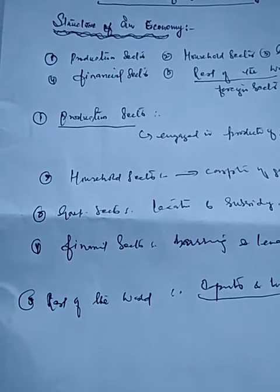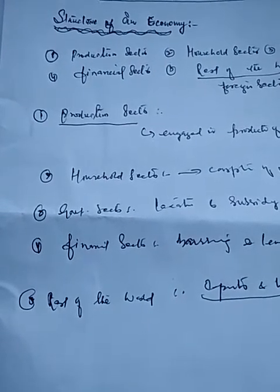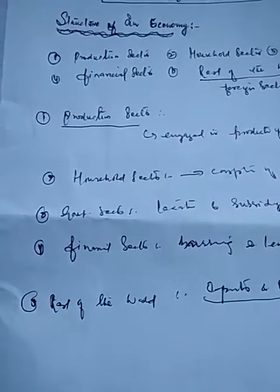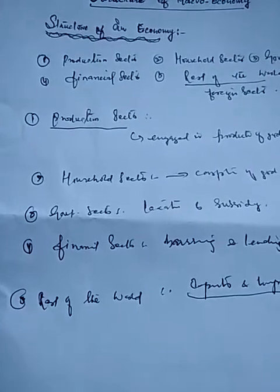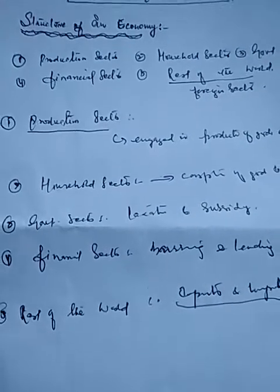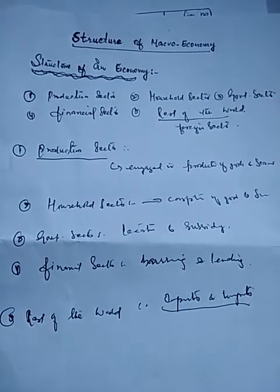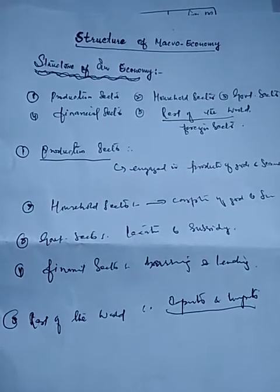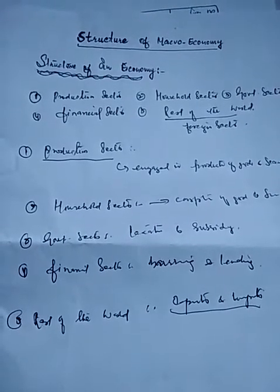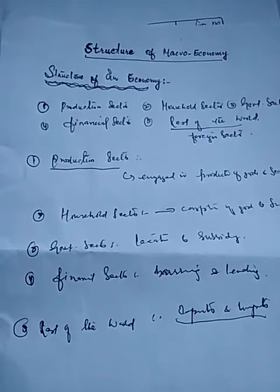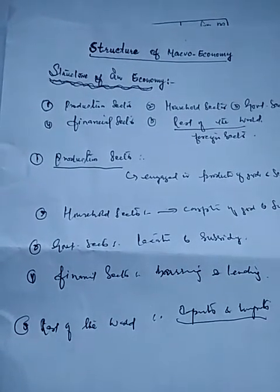So we have five sectors at work in the circular flow of income. These sectors work together, and there are certain injections and leakages into these sectors. It is through these injections and leakages that national income is generated. In the next lecture, we have to discuss the circular flow of income and the circular flow of goods and services across these five sectors. In the coming days, we will also discuss national income — how it is generated and various concepts related to it.